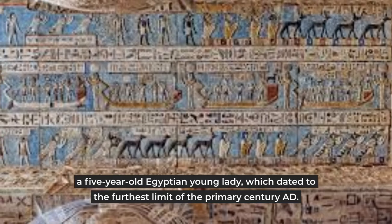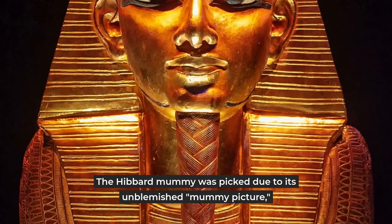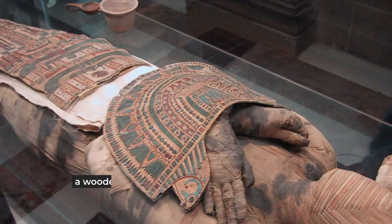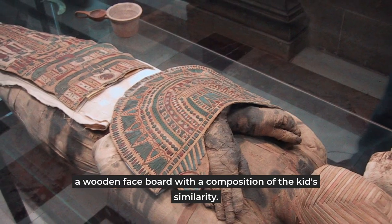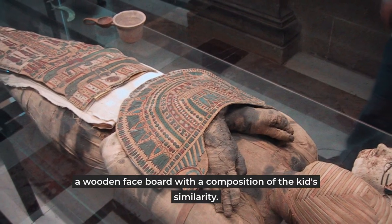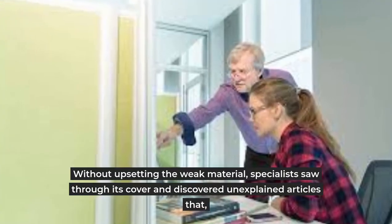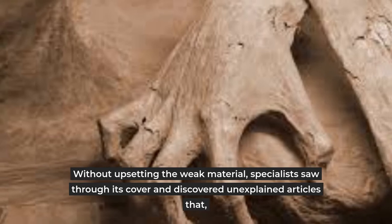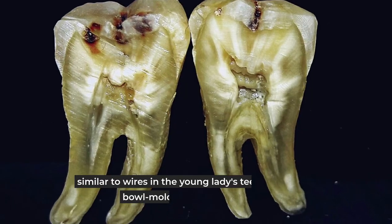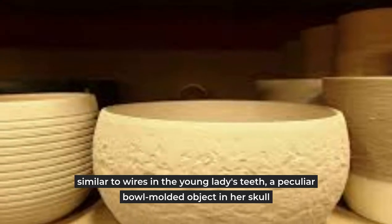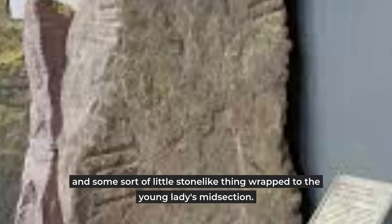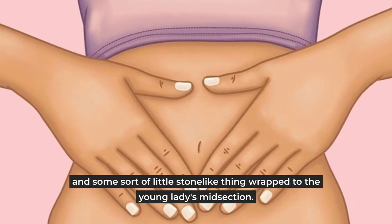The Hibbard mummy was picked due to its intact mummy portrait, a wooden face panel with a painting of the child's likeness. Without disturbing the fragile material, specialists saw through its cover and found unexplained objects like wires in the girl's teeth, a strange bowl-shaped object in her skull, and some sort of small stone-like thing wrapped to the girl's midsection.